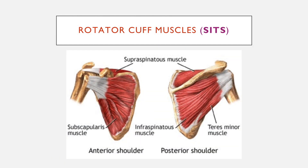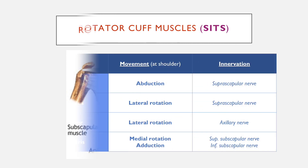This is another view showing the anterior view on the left and posterior view on the right. Anteriorly, you can see that most of the scapula is taken up by the subscapularis, with supraspinatus peaking up from the top. Posteriorly you can see the position of supraspinatus and infraspinatus, and teres minor also attaching from the scapula.